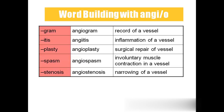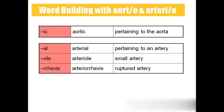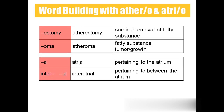Word building: angiogram — angio means blood vessel, gram means record, so a record of a blood vessel. Angiitis — inflammation of the blood vessel. Angioplasty — surgical repair of the blood vessel. Angiospasm — involuntary muscle contraction of the vessel; spasm always means involuntary muscle contraction. Angiostenosis — narrowing of the vessel. Aortic — pertaining to the aorta. Arterial — pertaining to an artery. Arteriole — smaller artery. Arteriorexis — ruptured artery. Atherectomy — surgical removal of fatty substance. Atheroma — fatty substance tumor or growth.